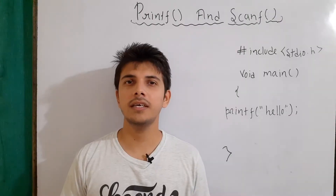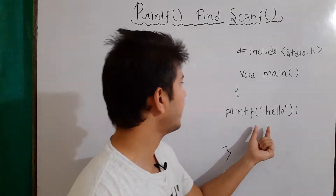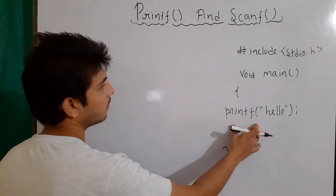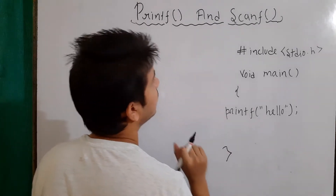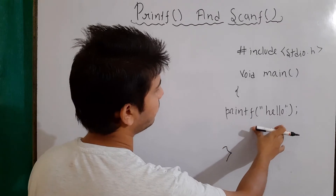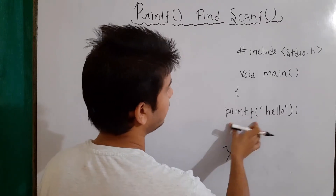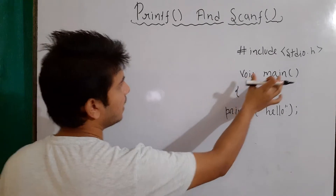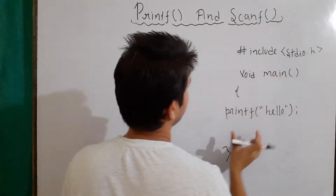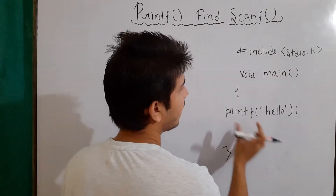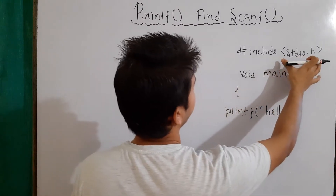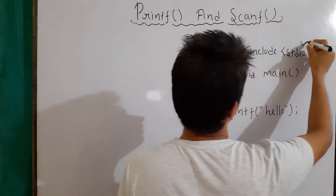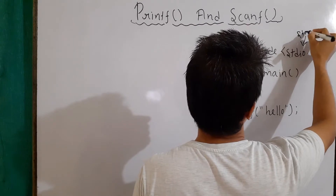The question that arises is that if I'm using any function, it must have some prototype. So where is the prototype of our printf function? The prototype of the printf function is defined in this header file. That's why we are including this header file — because the prototype of printf and also scanf is defined in this file. This is the standard header file.